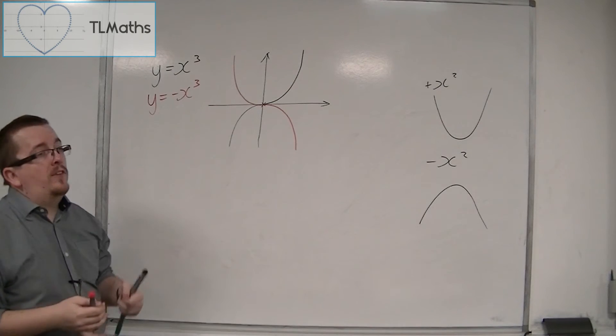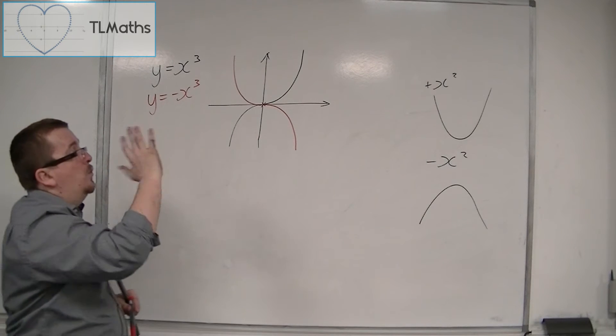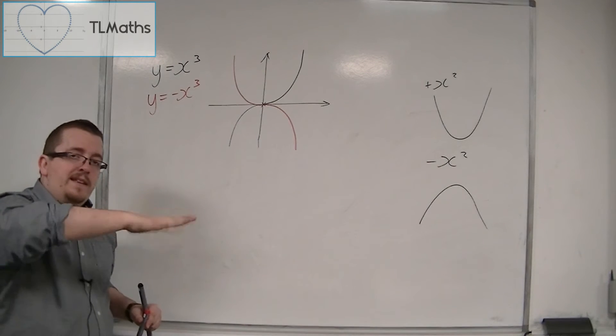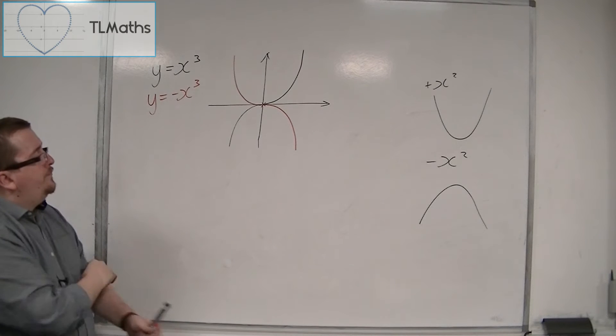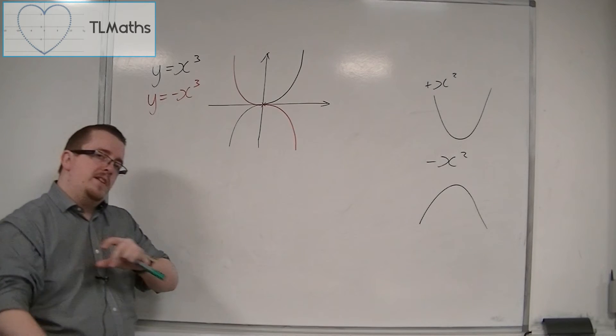So y equals minus x cubed is reflected either, you can see it as being reflected in the y-axis or being reflected in the x-axis. So that's, in general, what x cubed looks like.